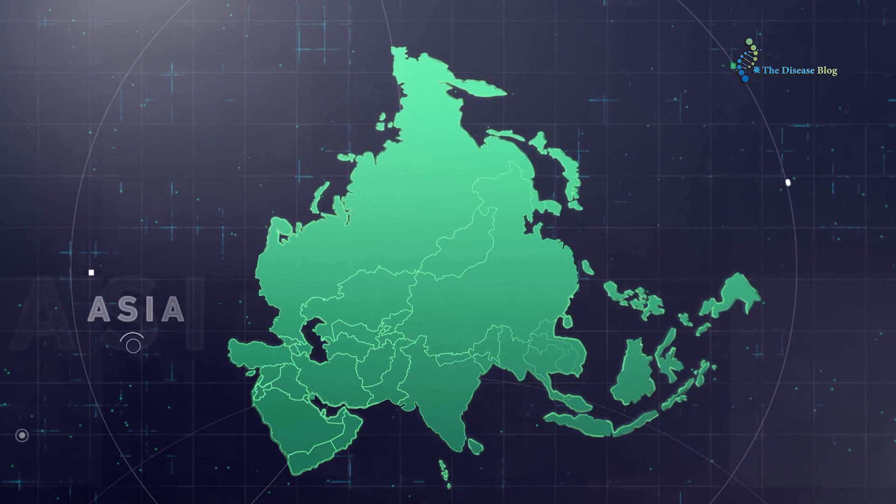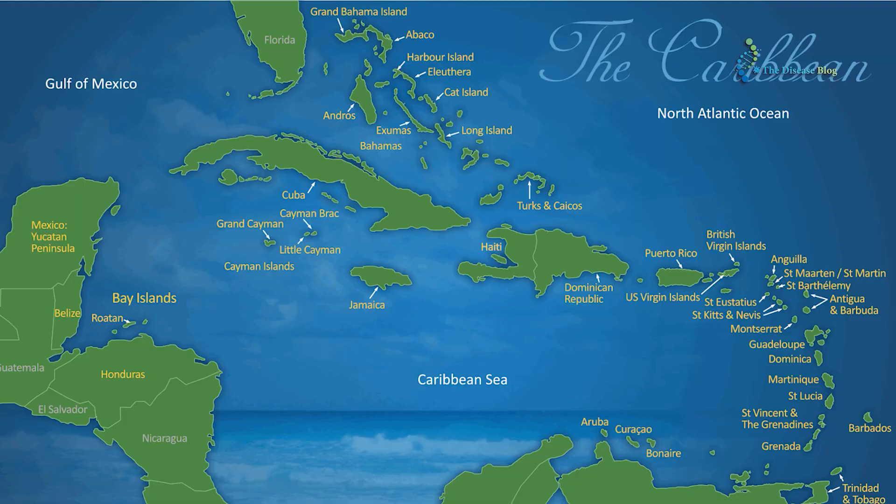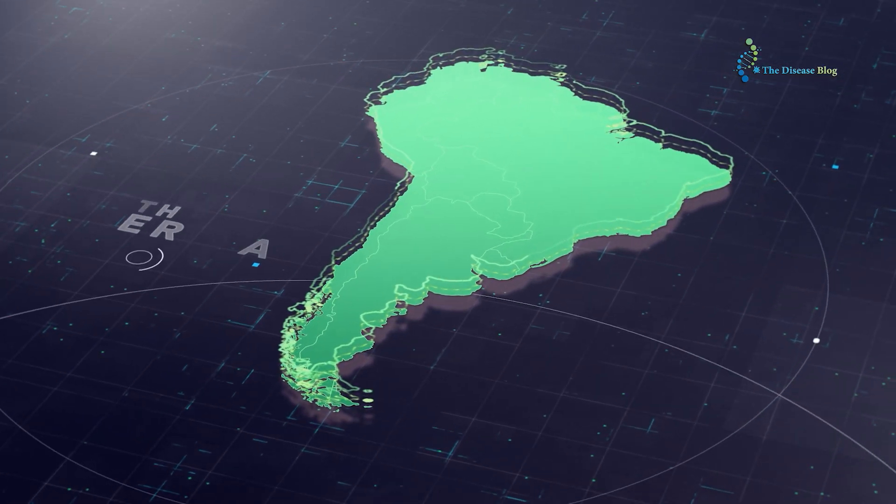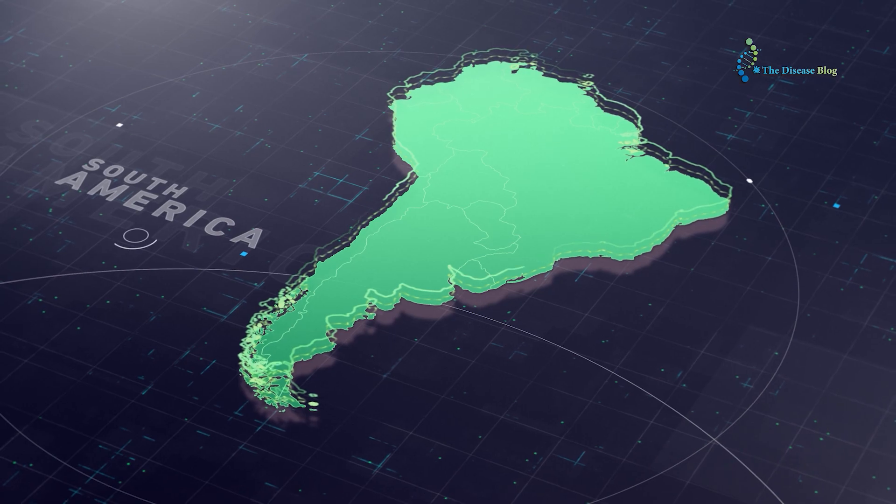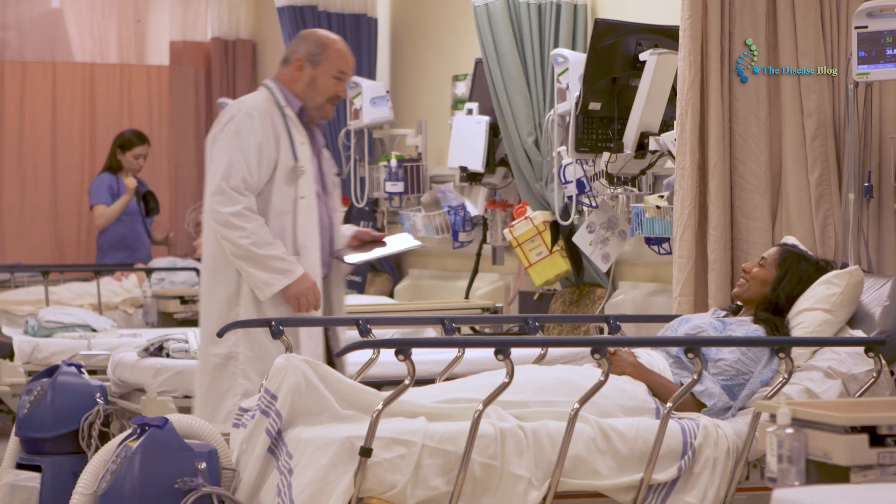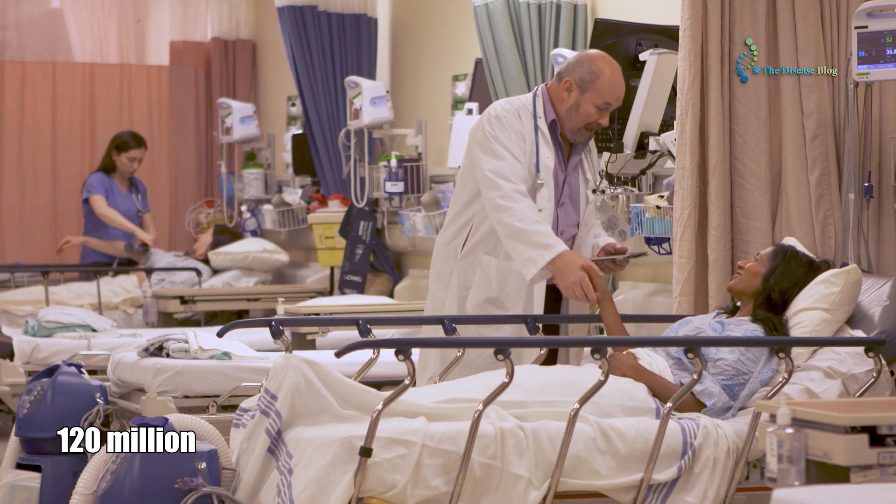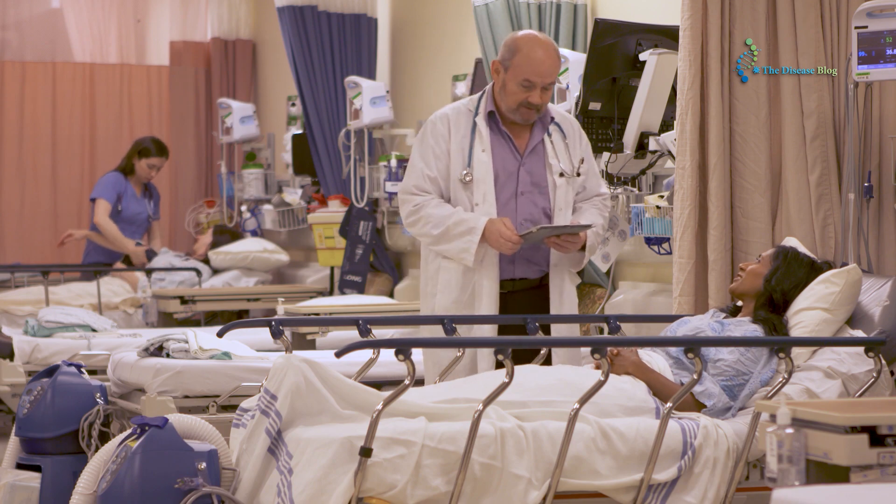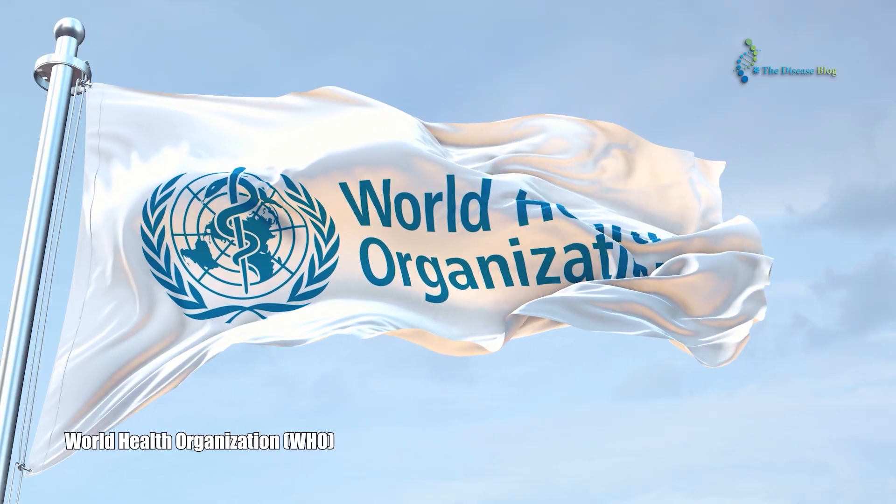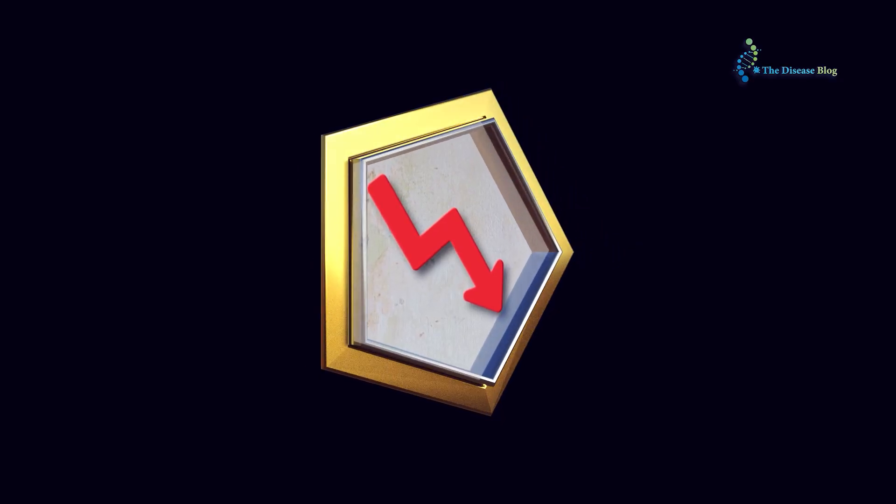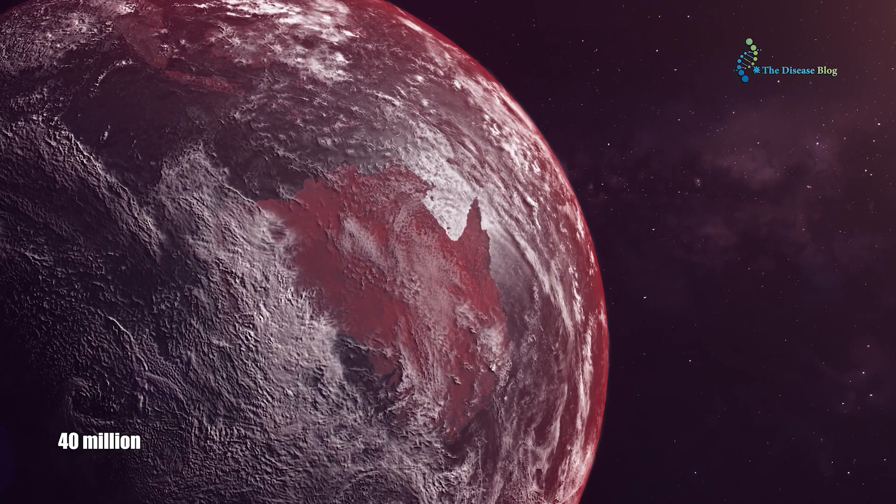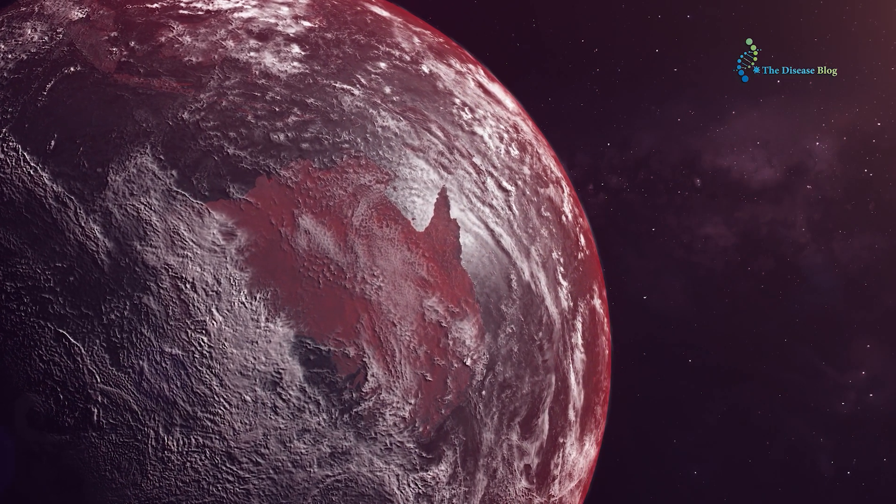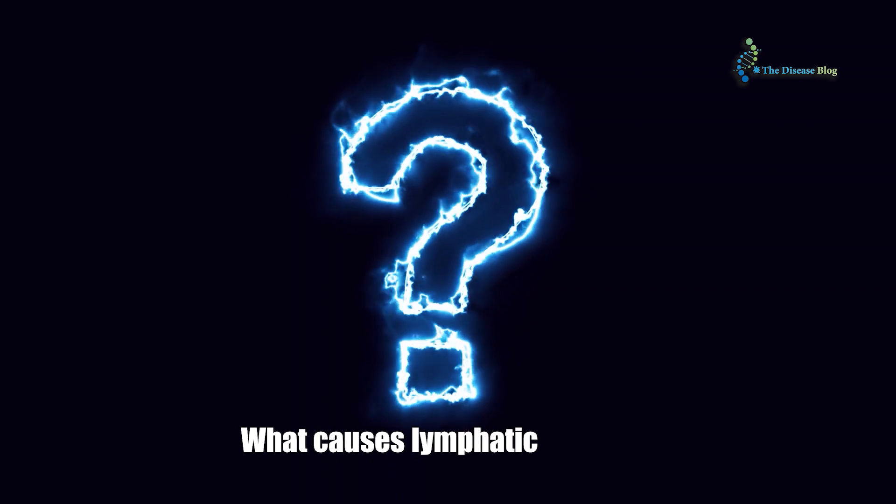These indications cause distorted and disfigured body parts resembling an elephant, a reason why lymphatic filariasis is also referred to as elephantiasis. Tropical and subtropical regions of Asia, Africa, the Caribbean, and South America have reported most of the cases of filariasis. To date, approximately 120 million people are affected by filariasis.